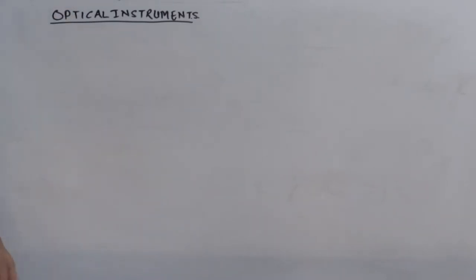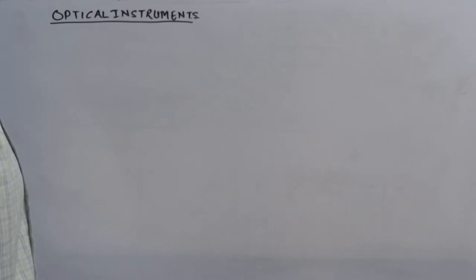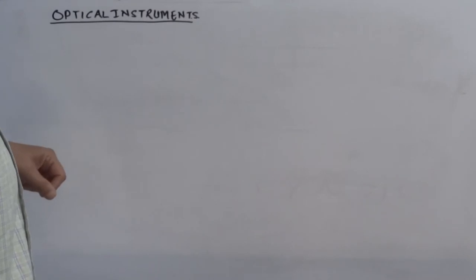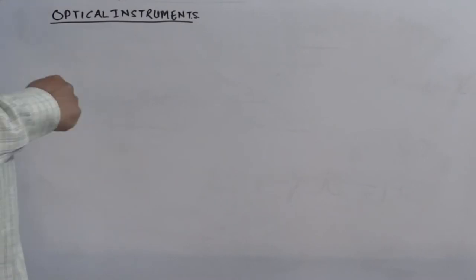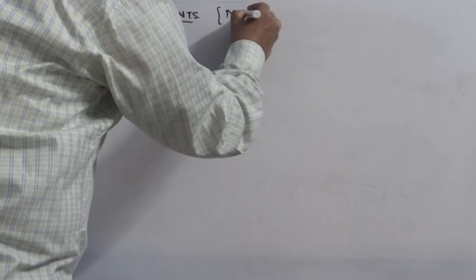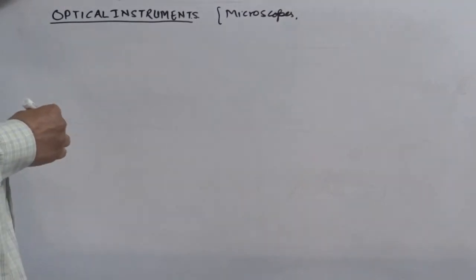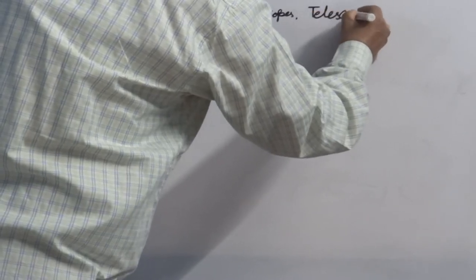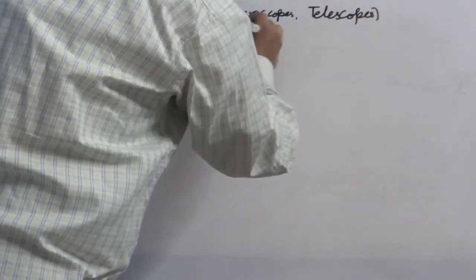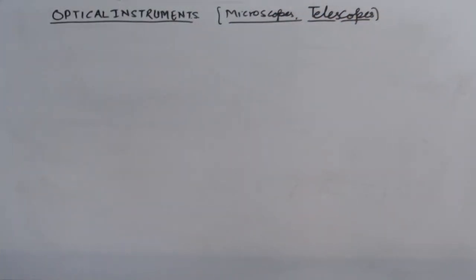Optical instruments are devices used to observe magnified images of objects. There are two types: some objects are very tiny, and the instrument used to observe their magnified image is termed a microscope. When we see a magnified image of a far-off or distant object, this is done by a telescope. We will talk about microscopes and telescopes one by one, starting with the microscope.